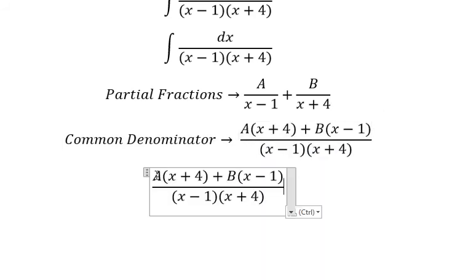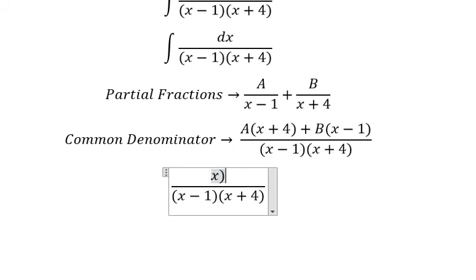Now we need to arrange based on the power of x. So we get A plus B, and we have 4A minus B.